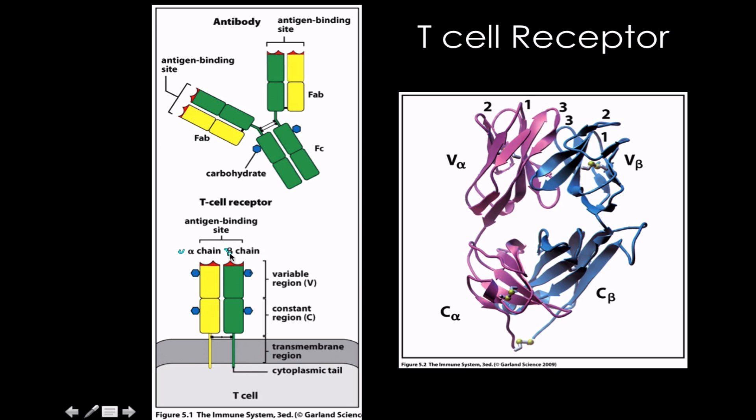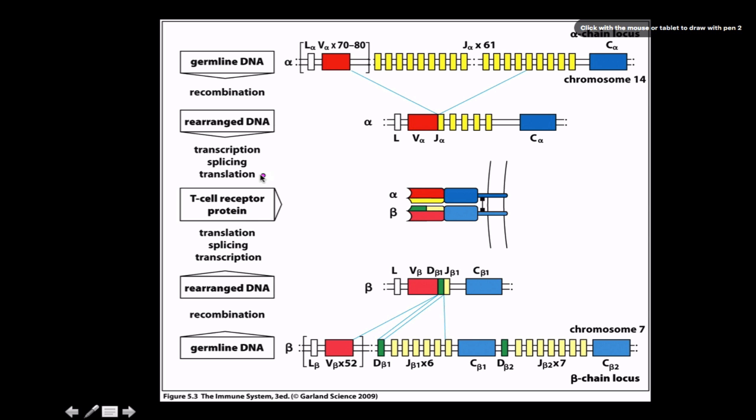The beta chain is homologous genetically to that of the heavy chains in the antibodies, and the alpha chain is homologous to that of the light chain in the antibody.